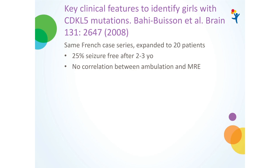The next paper from the same French case series expanded to 20 patients: 'Key Clinical Features to Identify Girls with CDKL5 Mutations.' They found that 25% are seizure-free after 2 to 3 years of age. The other important finding was no correlation between whether a patient was ambulatory and whether they had medically refractory epilepsy — so a child could be ambulatory and yet still have very devastating seizures.